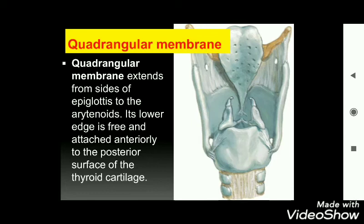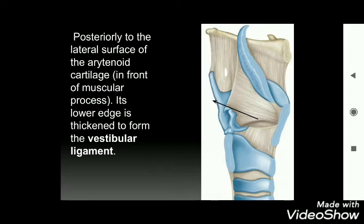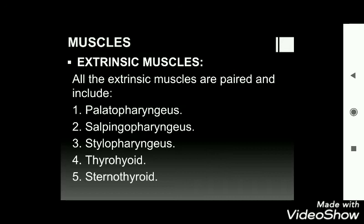The quadrangular membrane extends from the sides of the epiglottis to the arytenoid cartilages, forming the aryepiglottic fold. Its lower edge is free and attached anteriorly to the posterior surface of the thyroid cartilage and posteriorly to the lateral surface of the arytenoid cartilage, in front of the muscular process. Its lower edge thickens to form the vestibular ligament.